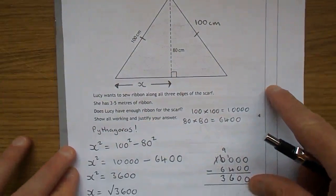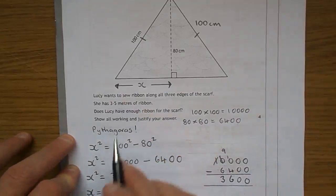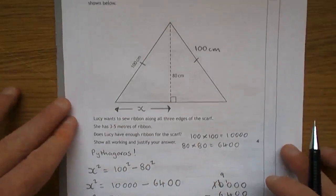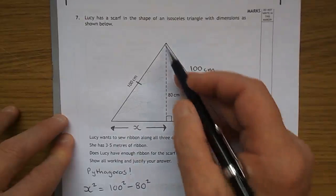Lucy wants to sew ribbon around all three edges of the scarf. She has three and a half meters of ribbon. Does she have enough ribbon for the scarf? This is all about getting the perimeter of this isosceles triangle.